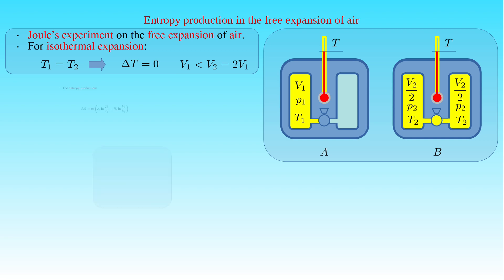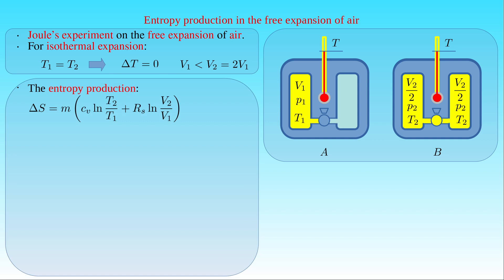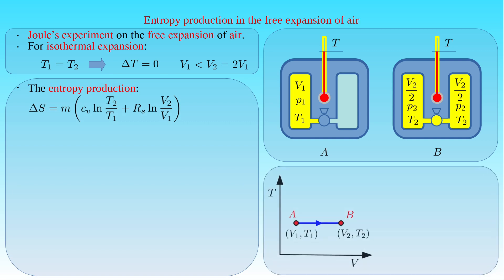We can apply the first formula obtained for the change in entropy of an ideal gas, where the first term vanishes because the temperature does not change. In the temperature-volume diagram, the isothermal free expansion of the air is represented by the horizontal line between initial state A and final state B. As a result, ΔS equals the mass M of the gas times its specific gas constant R_S times the natural logarithm of V2 over V1.